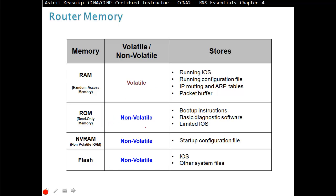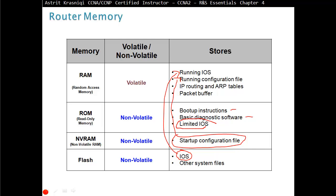When the router boots up, first it runs the basic diagnostic software — POST (Power-On Self-Test) — making sure all components are ready. Then it reads the boot-up instructions, which say: go to Flash, find and load the IOS into RAM — now called the running operating system. The next step is to find the startup configuration file in NVRAM and load it into RAM — now called the running configuration file. If IOS can't be found, there is still a limited IOS available for recovery or troubleshooting.